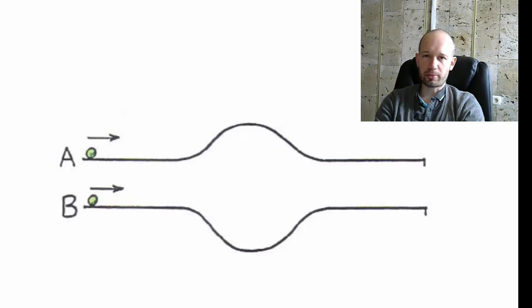So what is the problem? What are we doing here? We have two identical tracks, A and B, two identical balls, so they have the same mass and they start at exactly the same speed.